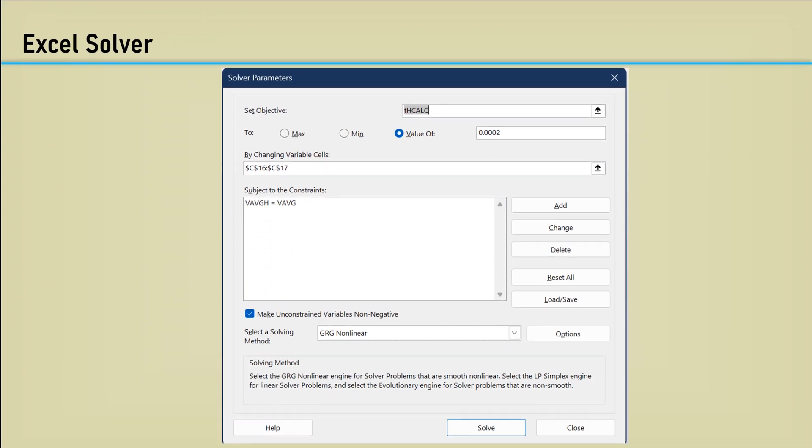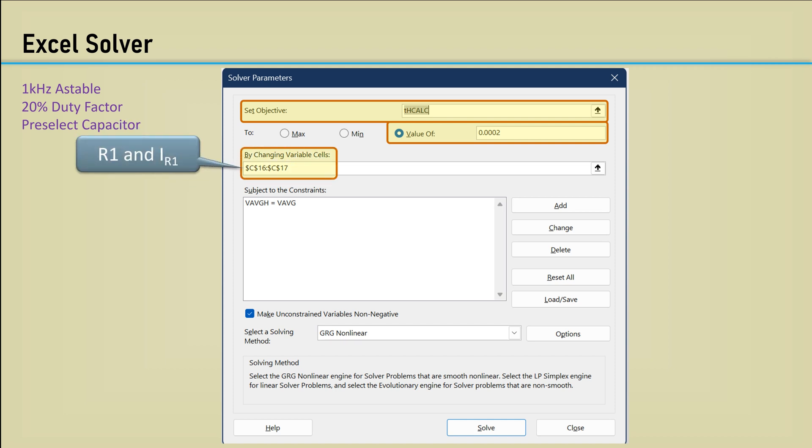We can make use of the solver in Excel to accomplish this for us. Excel has a goal-seek tool, but it's limited to changing only one variable. The solver tool can change multiple cells. In our example, we will design an astable with a frequency of 1 kHz and a duty factor of 20%. The set objective will be the time the voltage is high or low. In this case, the high time of 20% duty is 0.2 milliseconds or 0.0002 seconds.